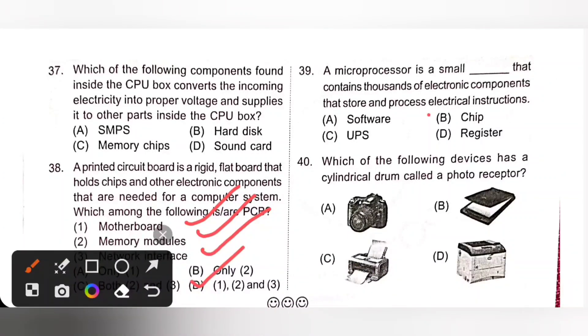Question 39. A microprocessor is a small blank that contains thousands of electronic components that store and process electrical instruction. A microprocessor is a small chip that contains thousands of electronic components that store and process electrical instruction. Option B is the correct answer.